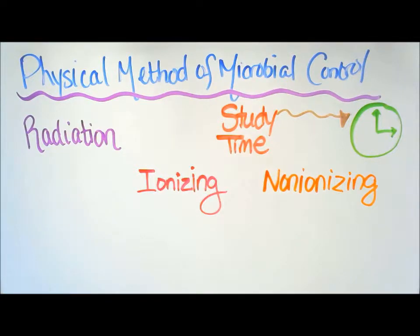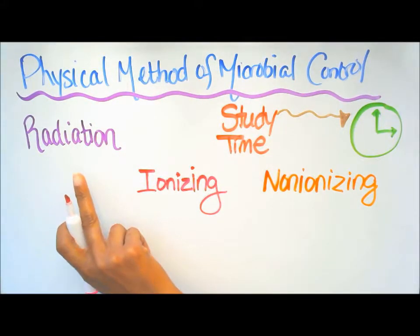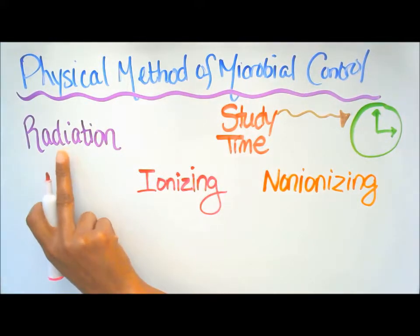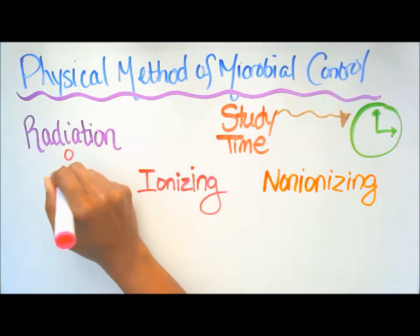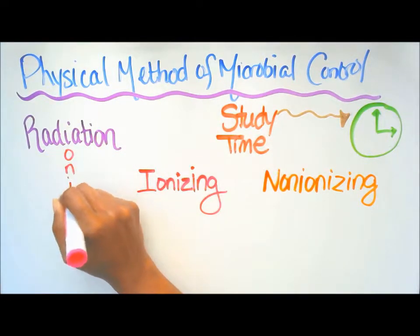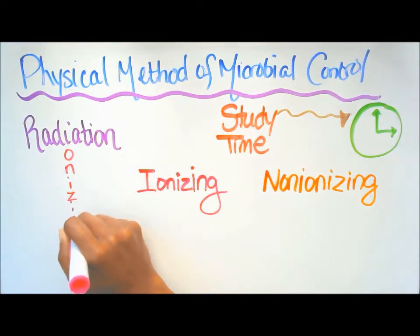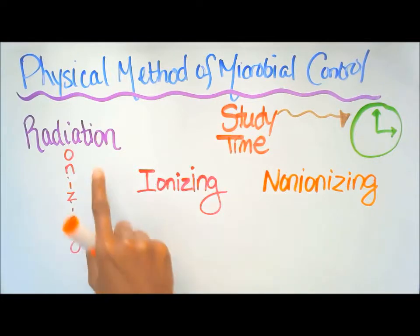This is the study time session of the video. We're going to start here with radiation. Now with sterilizing radiation there are two types: ionizing and non-ionizing. So here we're going to use the I for ionizing, and we're going to use the IN for non-ionizing.